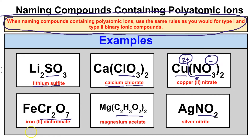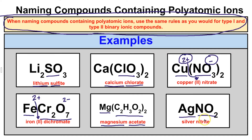For FeCr2O7, iron is a Type 2 metal, so we determine its charge by looking at dichromate, which has a 2- charge. With one iron, it must have a 2+ charge, giving us iron(II) dichromate. Magnesium is a Type 1 metal from Group 2, so we just call it magnesium, and C2H3O2- is acetate — magnesium acetate. Silver is a Type 1 metal, so we just name it silver, and NO2- is nitrite — silver nitrite.